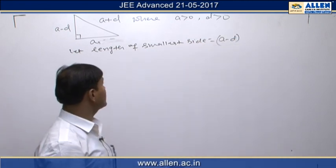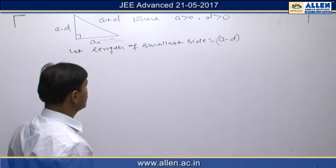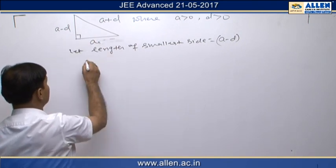Now to find the length of the smallest side, we must know the values of a and d. For this we have two equations. One we can frame from the right angle triangle, so we can apply Pythagoras theorem.